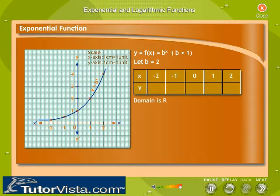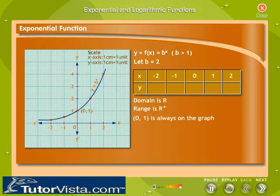The domain of the exponential function is R, the set of real numbers. The range of the exponential function is R+, the set of all positive real numbers. The point (0, 1) is always on the graph of an exponential function.